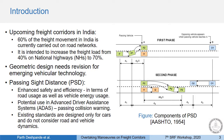One key design parameter is the Passing Sight Distance or PSD, which is important for overtaking manoeuvres. The provision of sufficient PSD avoids congestion and increases safety, and it is also used in the development of Advanced Driver Assistance Systems or ADAS.